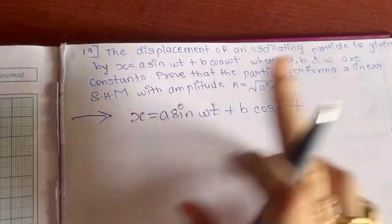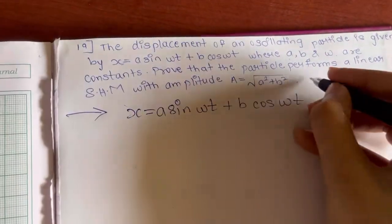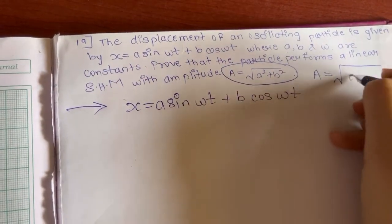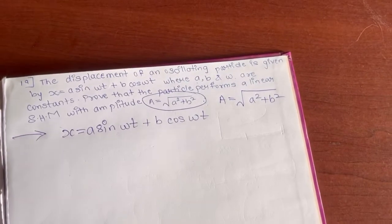Prove that the particle performs linear SHM with amplitude A = √(a² + b²).